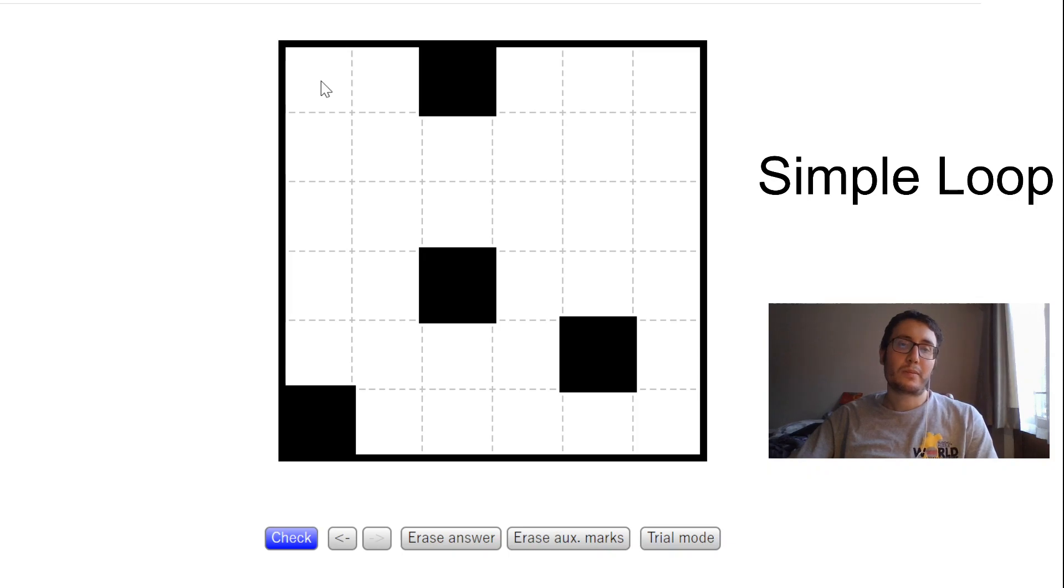So the obvious place to start is always the corners. There will always be corner cells in Simple Loop puzzles you can use, because a loop segment connects two cells and every cell is connected to two other empty cells. So this corner can only connect to this and this. The connections are orthogonal only, I should say. And this should continue downwards.